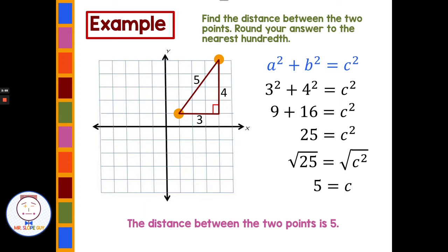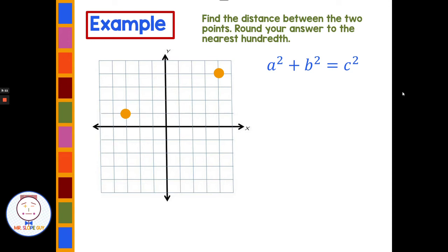Now they won't always come out to be nice whole numbers — a lot of times we end up with decimals. In this case, our directions tell us to round to the nearest hundredth, which is like rounding to the nearest penny if we think of money. Let's look at a new example: find the distance between the two points, rounded to the nearest hundredth. We do the same thing — draw a right triangle and count the legs using vertical and horizontal lines. Finding the hypotenuse will give us the distance between the two points.